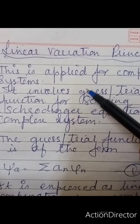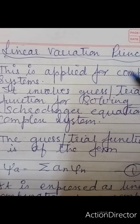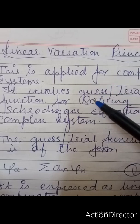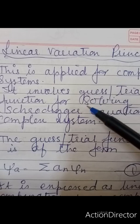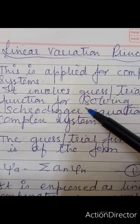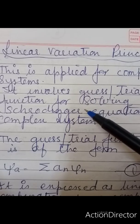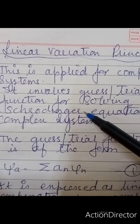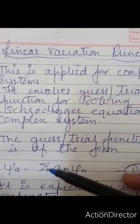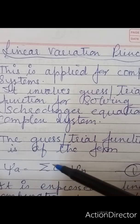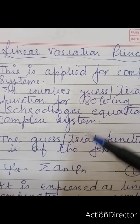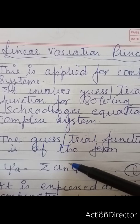Today we will discuss the linear variation principle, which is applied for complex systems and involves guessing trial functions for solving the Schrödinger wave equation. The trial function is represented as psi_a equal to summation of a_n psi_n, expressed as a linear combination of a complete set of normalized and orthogonal eigenfunctions.